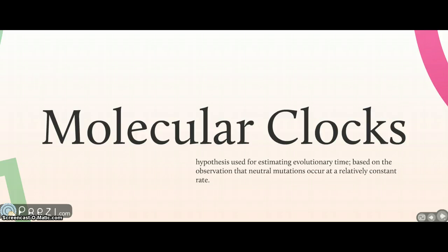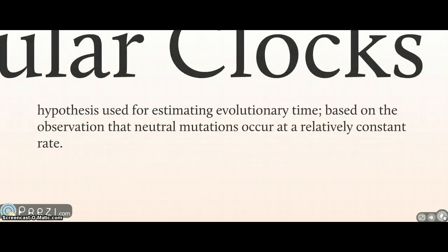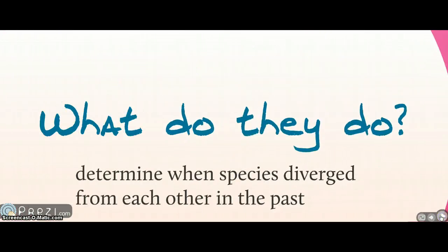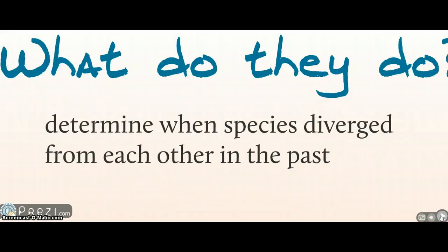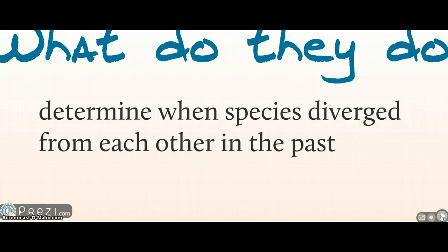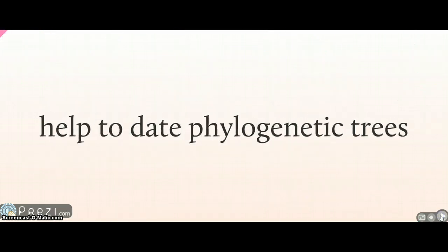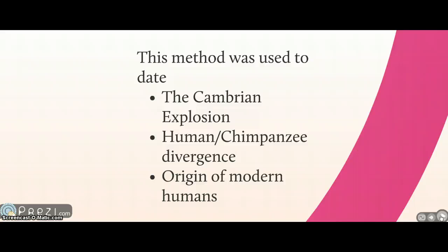My project is on chapter 26.4: molecular clocks. The molecular clock theory is a hypothesis used for estimating evolutionary time, based on the observation that neutral mutations occur at a relatively constant rate. The main thing molecular clocks do is determine when two species diverged from each other in the past. They also help date and organize phylogenetic trees. Specific examples include the Cambrian explosion, when humans and chimpanzees diverged, and the origin of modern humans — in each case, the molecular clock method was used to find the date.